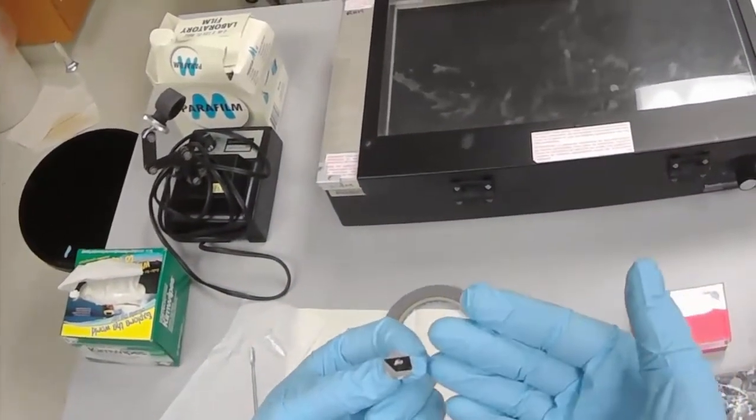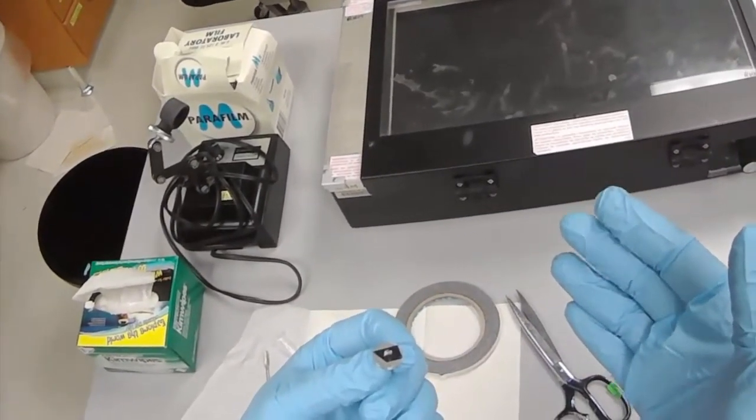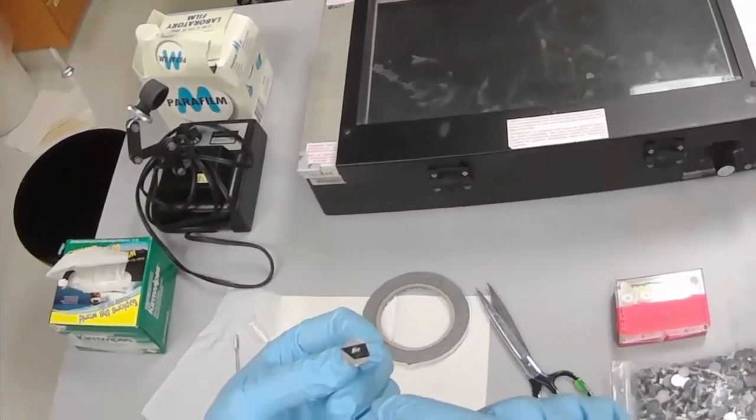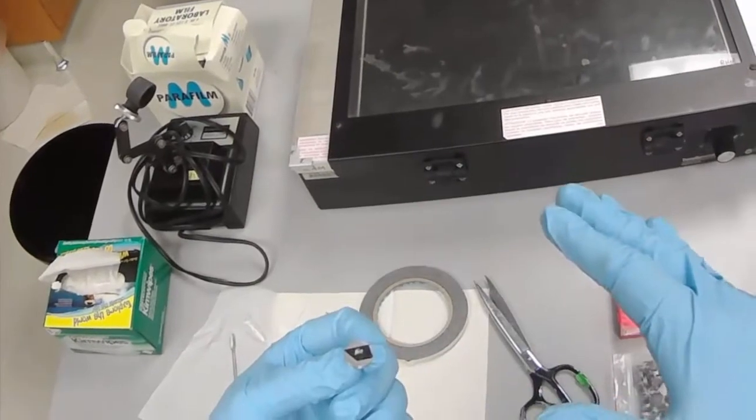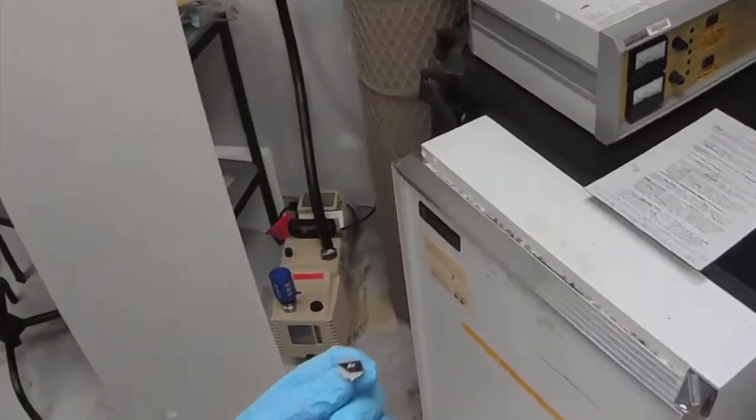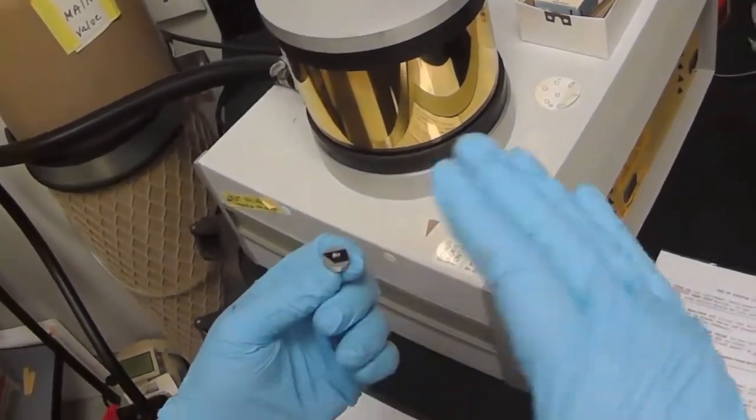Now our sample is a polymer, a non-conducting polymer. In the electron beam, it will experience static charges and blow apart. So to make this sample conductive, we're going to coat it with a thin layer of gold. The idea is we want a layer that's so thin that it will not change the shape.